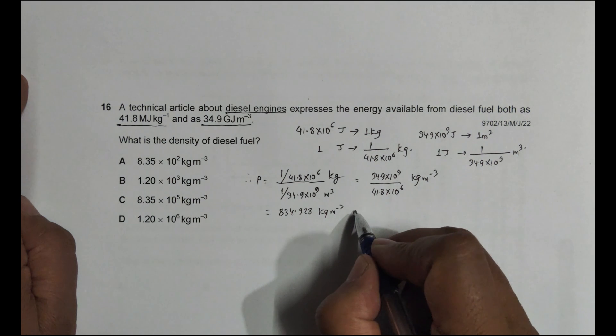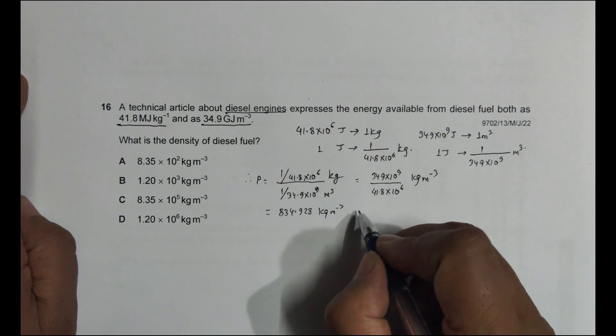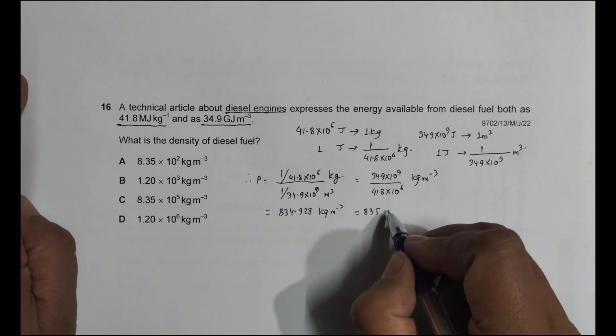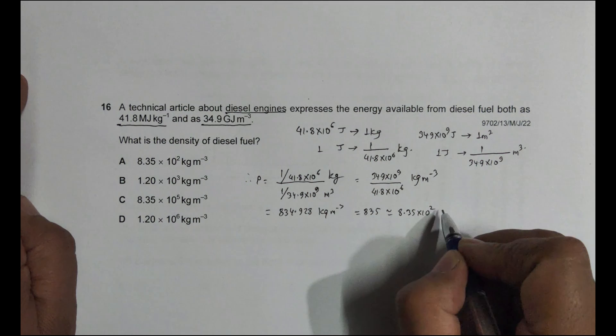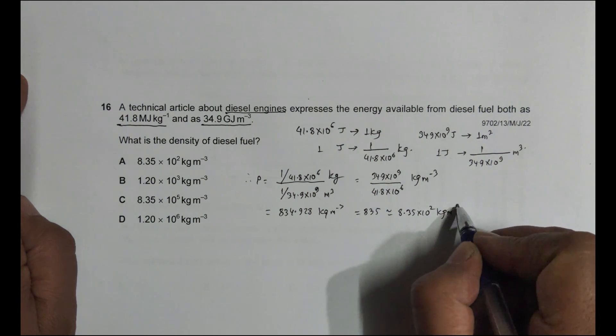So when I change it into 3 significant figures, the answer is given in 3SF, equal to 835, nearby equal to 8.35 into 10 to the power 2 kg per meter cube.